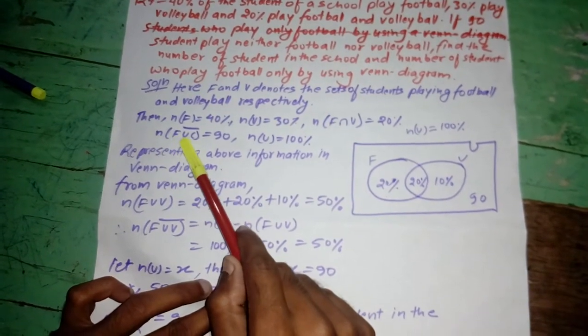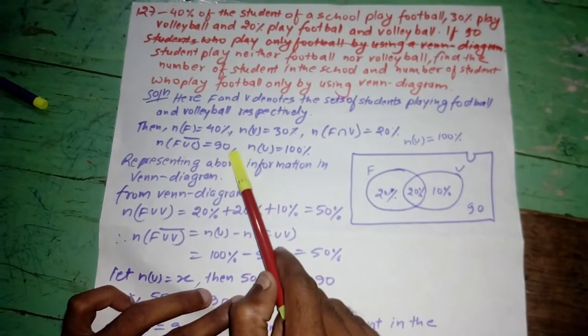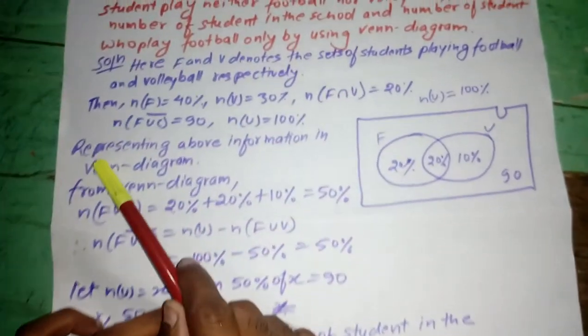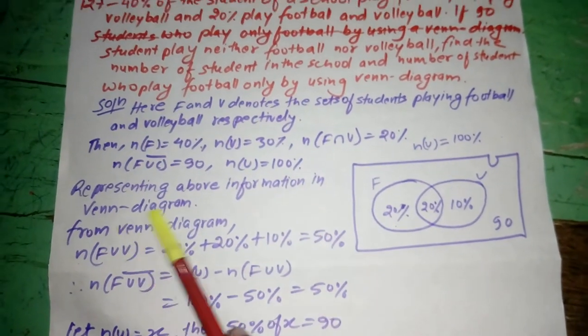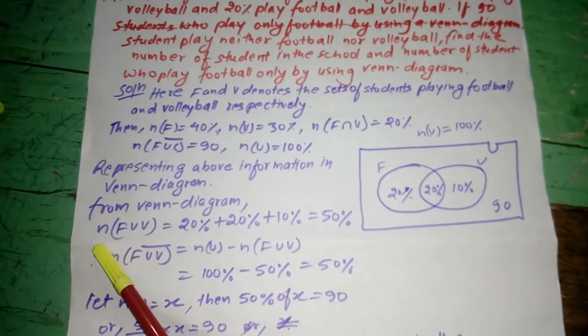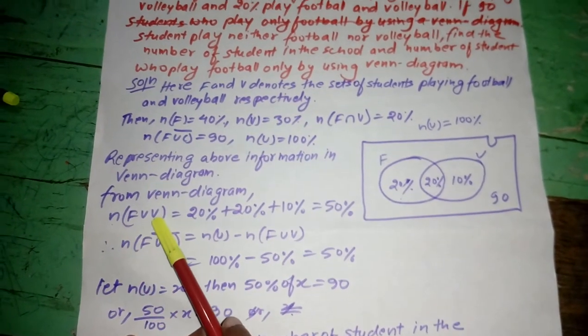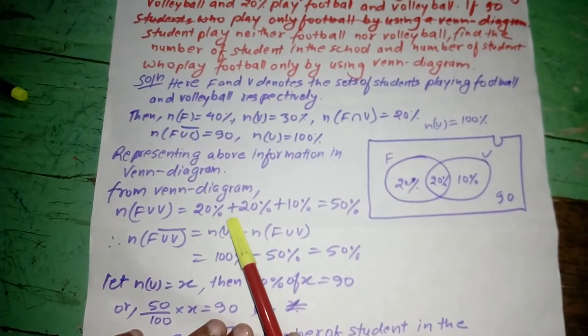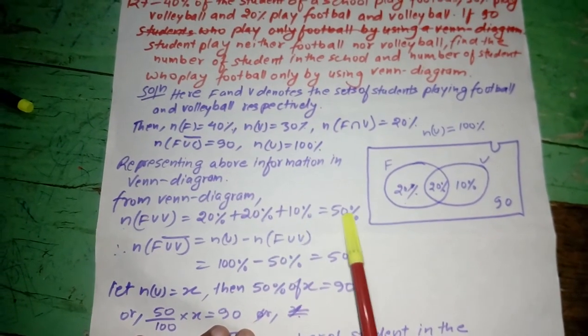And n(F∪V)complement is equal to 90 and n(U) is equal to 100%. Representing above information in Venn diagram. From Venn diagram, n(F∪V) is equal to 20% plus 20% plus 10% is equal to 50%.